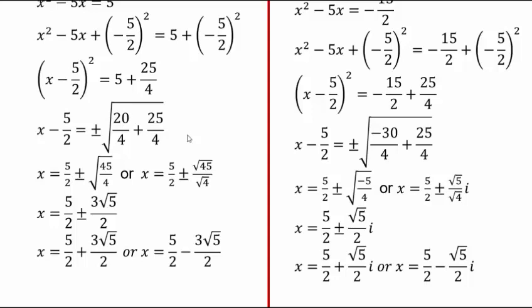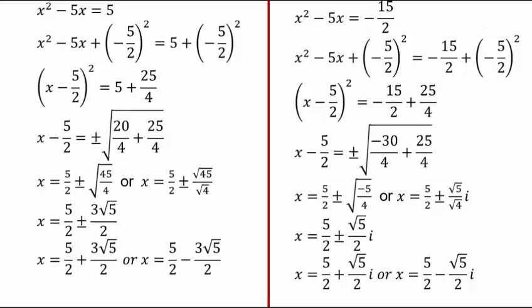It's the exact same process for every problem. A mathematician doing the same process over and over will ask: is there a more efficient way? So instead of repeating the completing the square process each time, we need to think differently — apply completing the square once to a generic quadratic equation, and then we'll have a formula we can use every time.